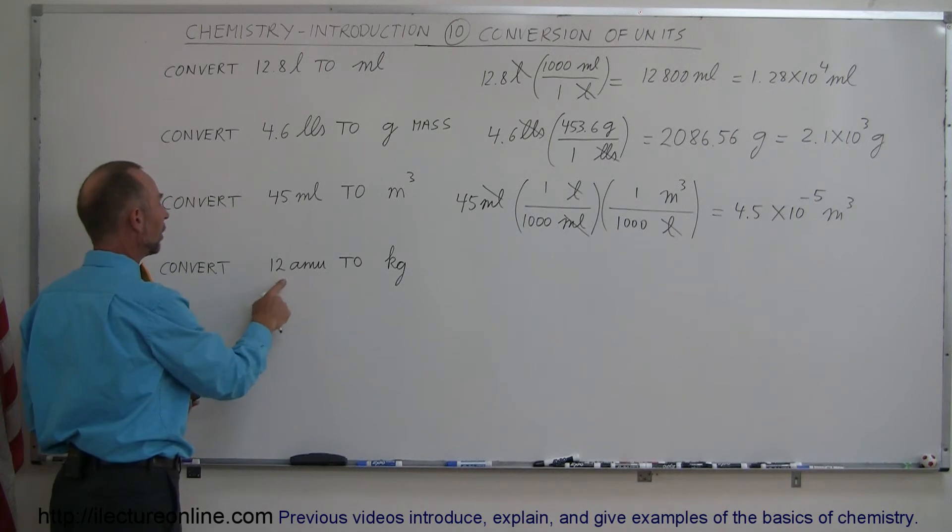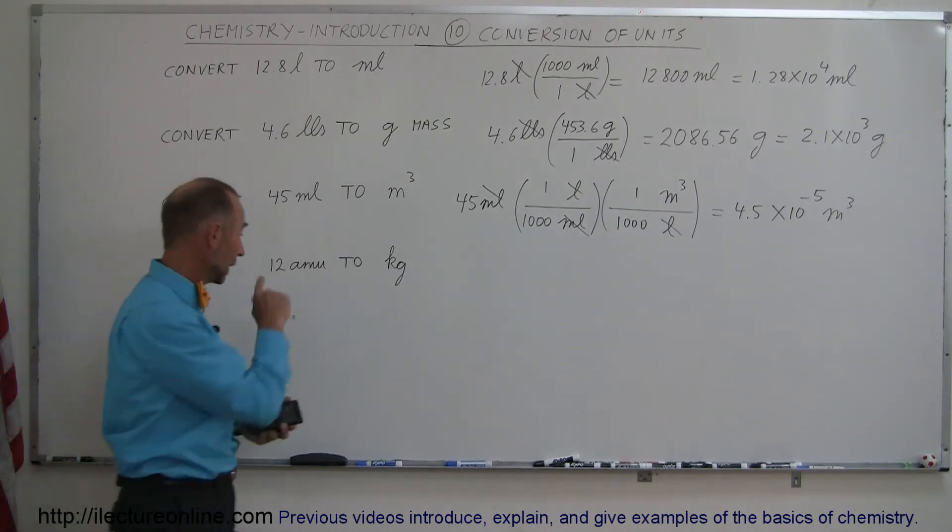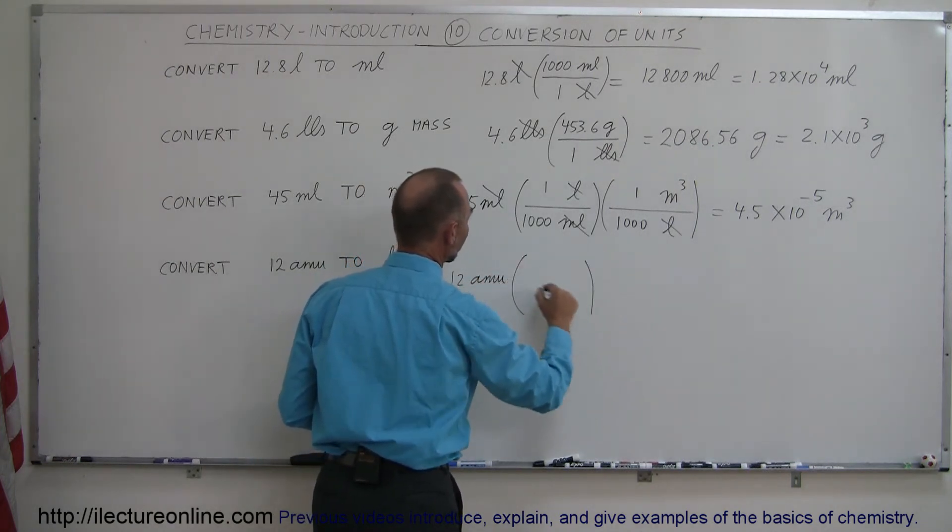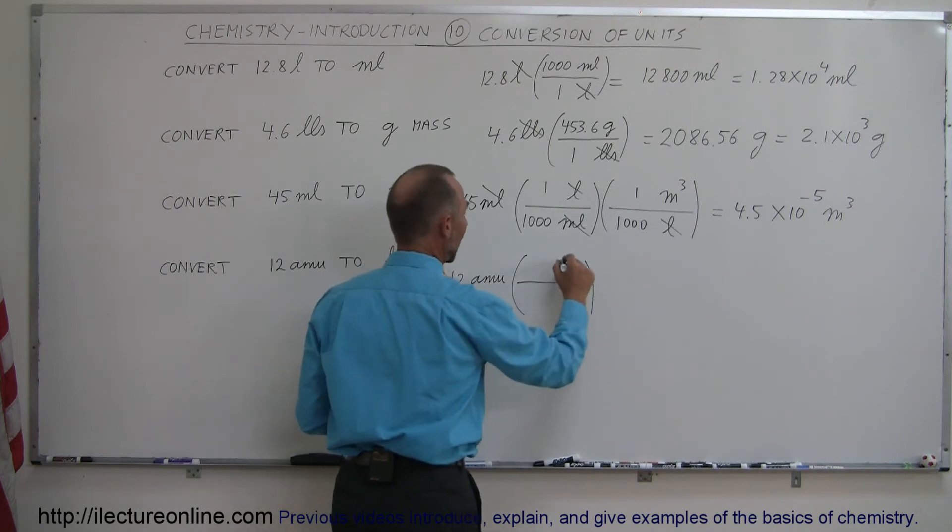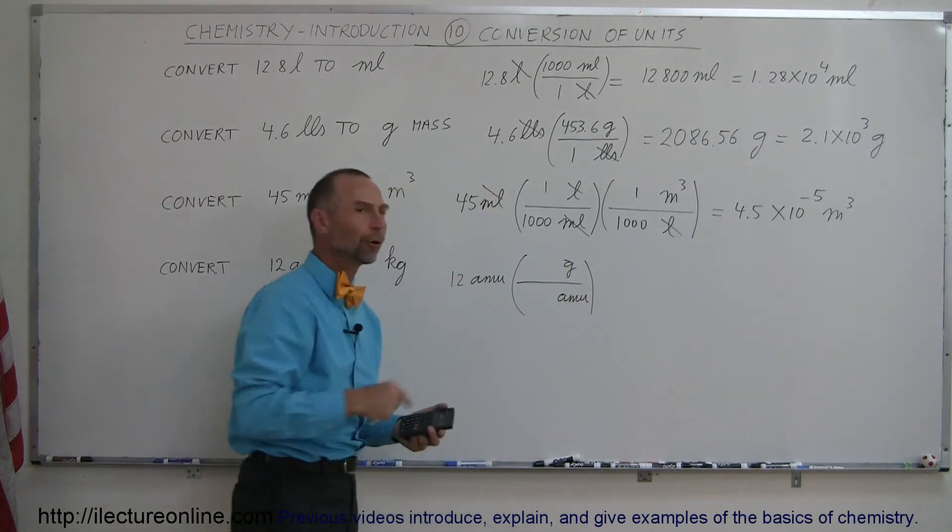Next, let's convert 12 AMU to kilograms. How do we do that? Well, let's write down 12 AMUs. The first thing we're going to do is convert from AMUs to grams. So grams at the top and AMUs at the bottom.